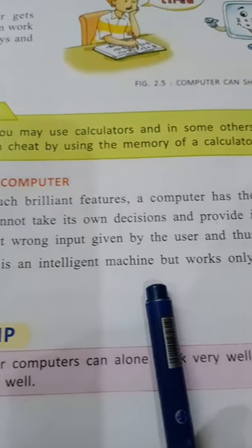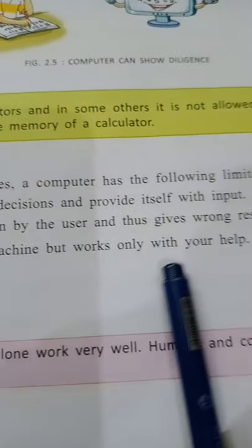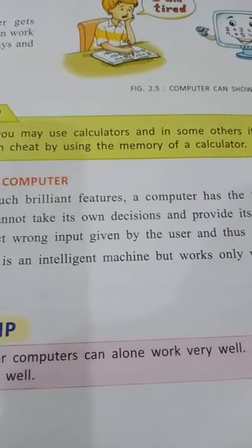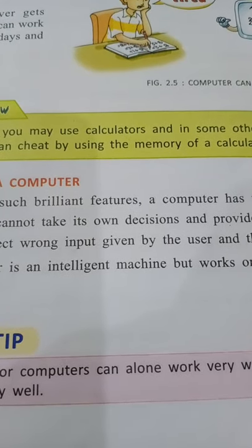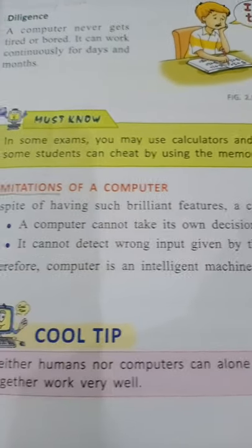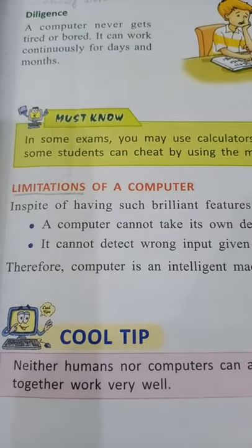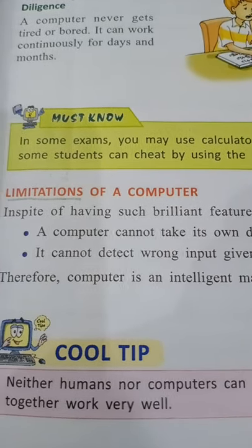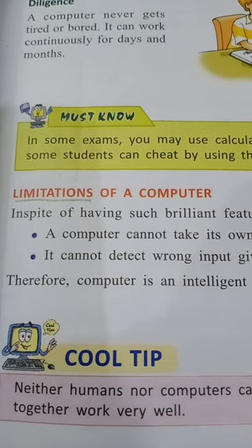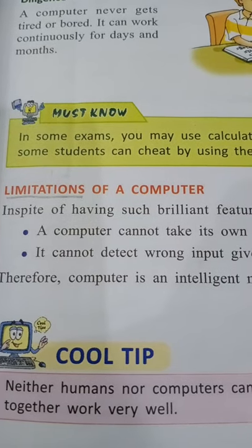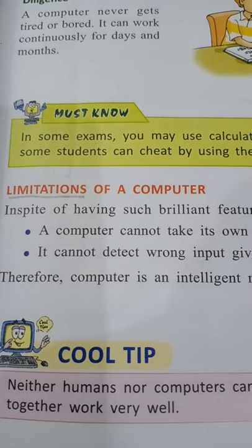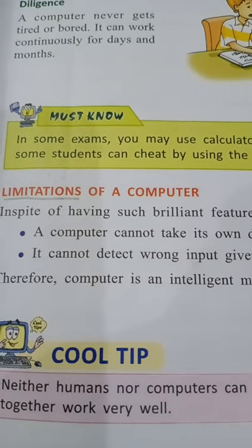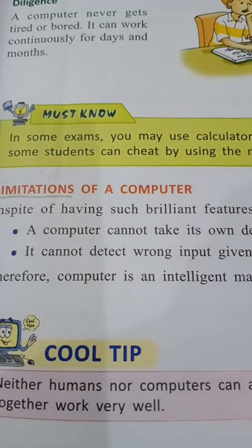Therefore, the computer is an intelligent machine but works only with your help. Our work is easy to do with a computer, but if the user does not give proper instructions, the computer will not work. So there are two limitations and five characteristics.